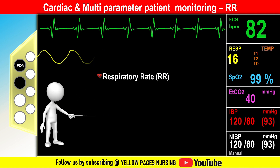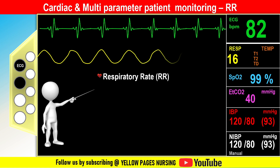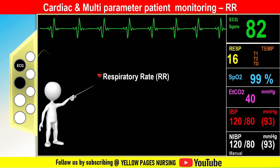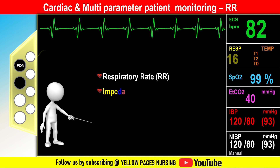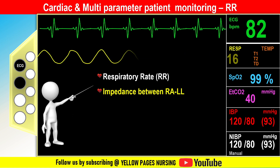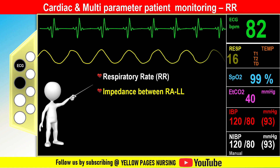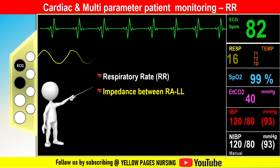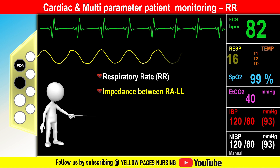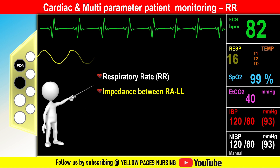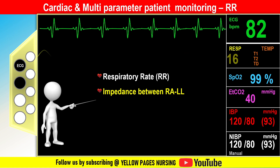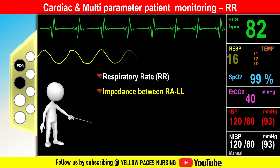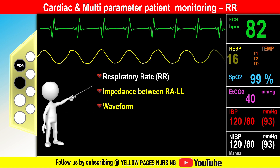Respiratory rate counts the number of breaths per minute, providing information about respiratory function. No specific cable is needed; ECG electrodes are strategically placed on the patient's chest to measure thoracic impedance — the movement of air in and out of the lungs during the breathing cycle. From this thoracic impedance, respiratory rate is calculated.